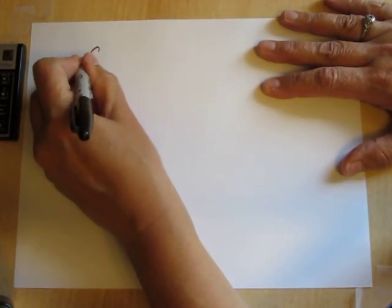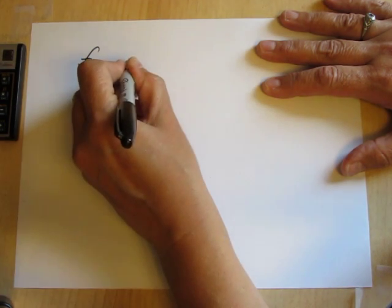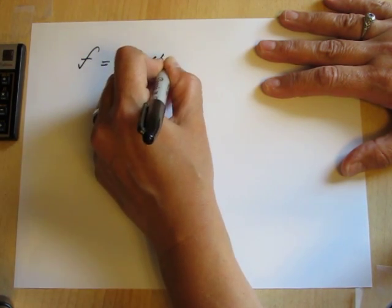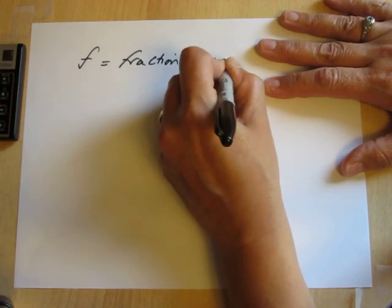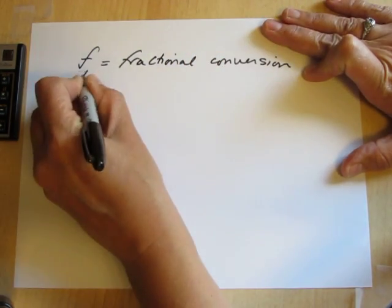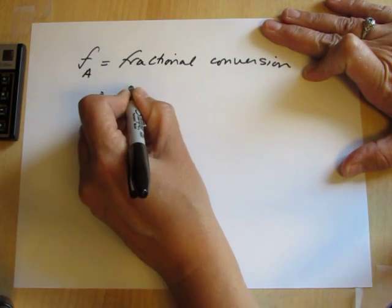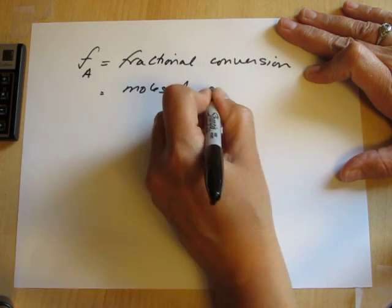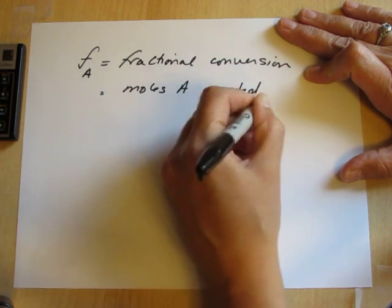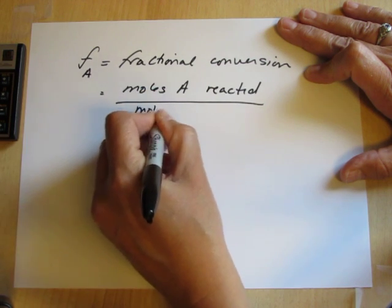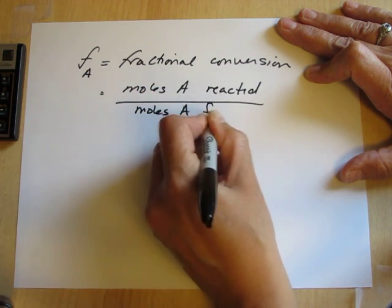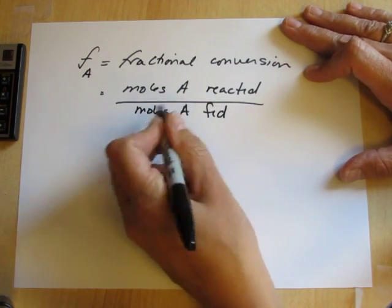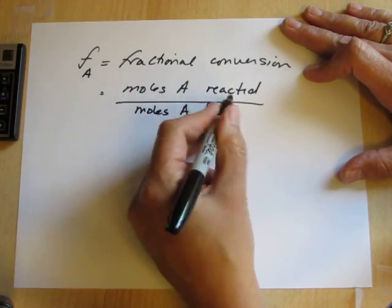Now often in a chemical reaction problem, we are given another piece of information: the fractional conversion. Fractional conversion of a species, let's say species A, is the moles reacted of species A over the moles fed. So it's the fraction of the moles of this species fed that are actually reacted.